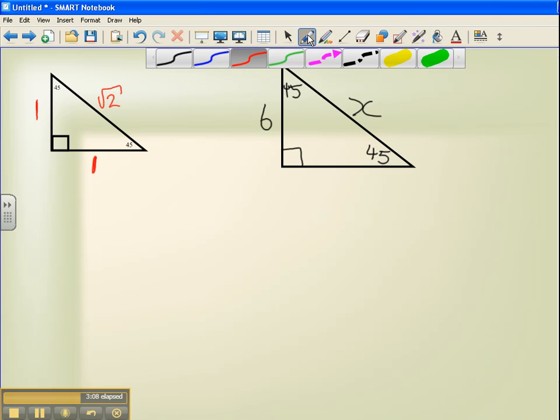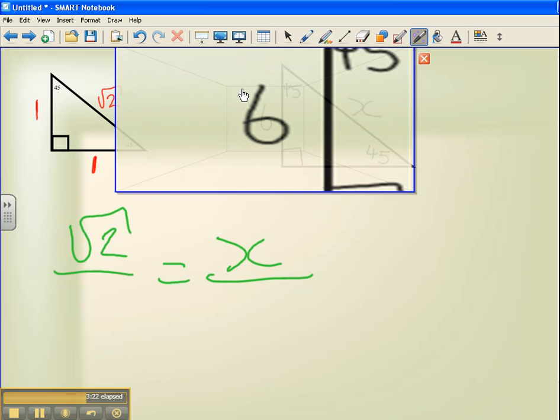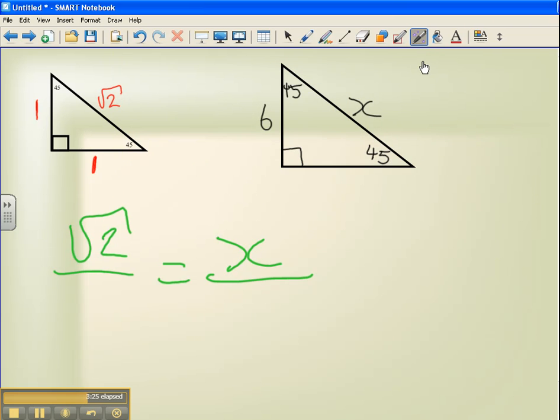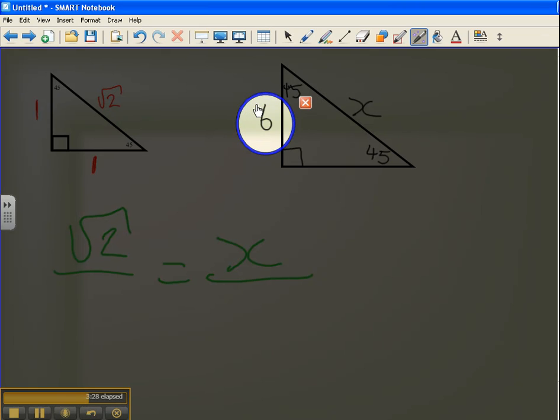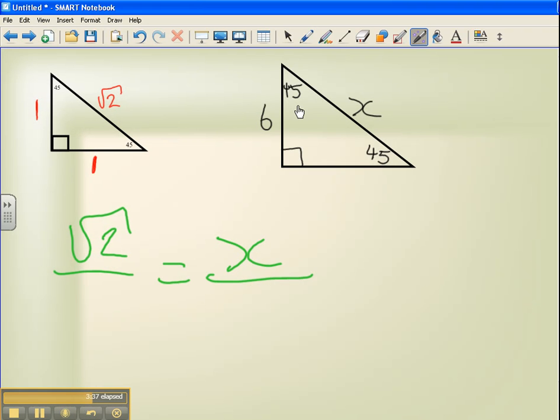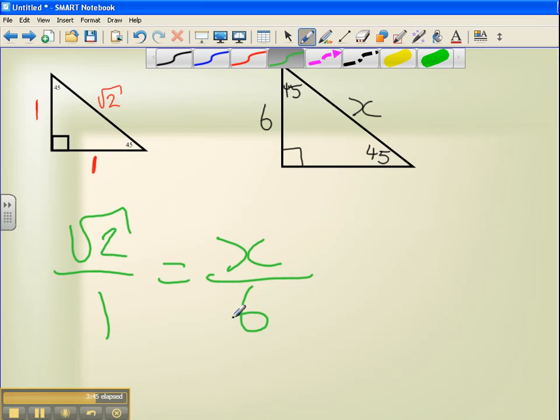This means I can write root 2 is the same side as x. It's not done yet. I have to do the bottom. Otherwise, the ratio doesn't work. Next part, we're looking at this 6. We know that 6 is the same side as this leg, or 1. So 1 and a ratio. So our ratio is 1 and our side is 6. So root 2 is the same side as x. 1 is the same side as 6.